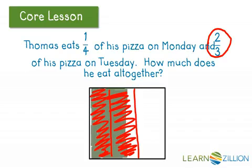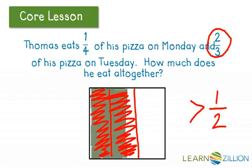So if we're even adding more to that — adding that one fourth to it — we don't really even have to do more to see that our answer should be greater than one half. So when it actually comes to solving this, we're going to think: we predicted our answer was going to be larger than one half, so we'll compare what we came up with and see how accurate our answer is.